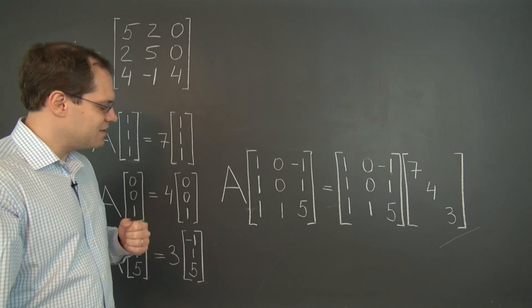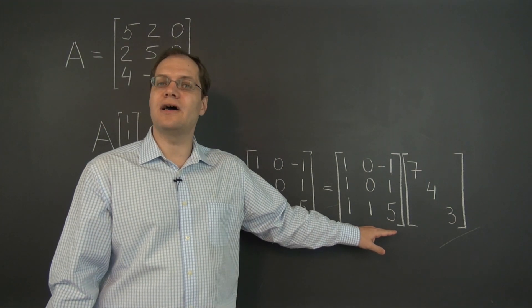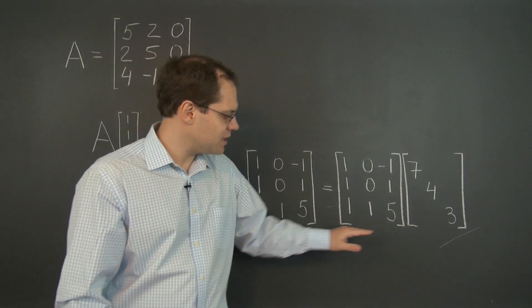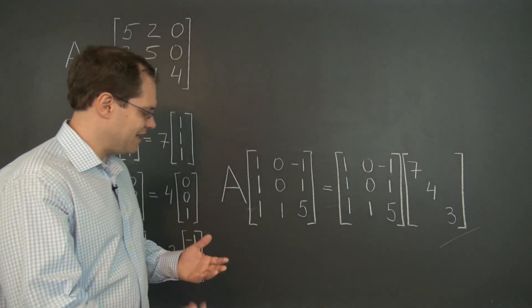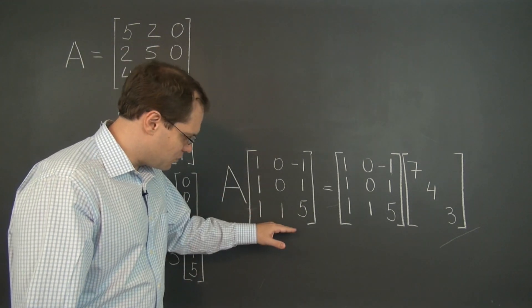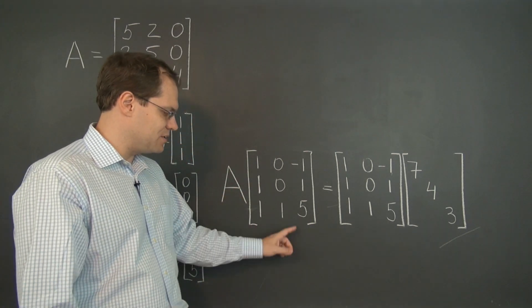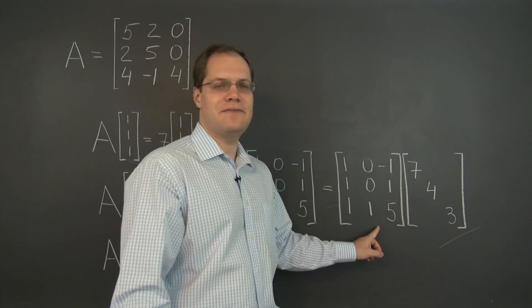And what's very nice is that this matrix that consists of the eigenvectors as its columns appears twice, once on the left and once on the right. Of course, we can't cancel it because on the left hand side, it appears on the right of the product. And on the right hand side, it appears on the left of the product.